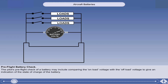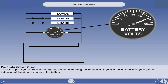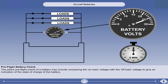The pilot's pre-flight check of a battery may include comparing the on-load voltage with the off-load voltage, to give an indication of the state of charge of the battery. If the battery is not supplying any load, then it will show its off-load voltage. If the battery is then loaded up by switching on selected loads and the voltage is maintained, then the battery is in a good state of charge. If the voltage falls below a stated value within a time limit determined by the manual, then the battery is in a low state of charge and should be replaced.